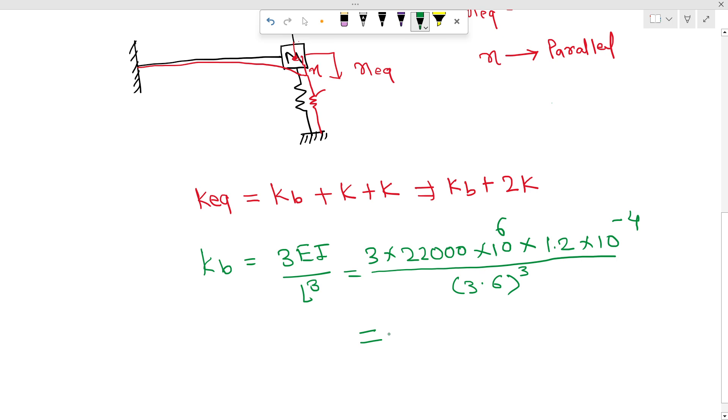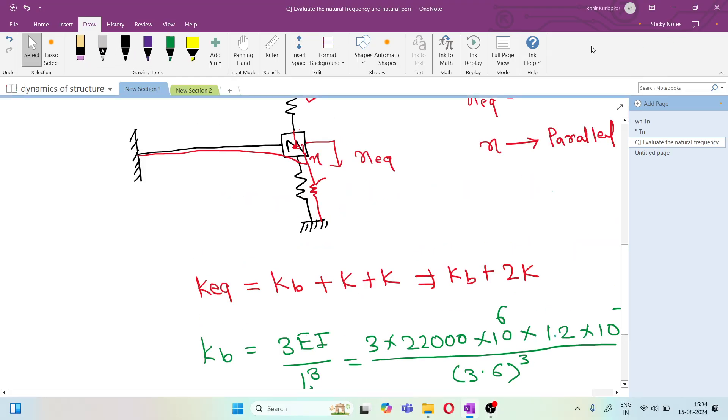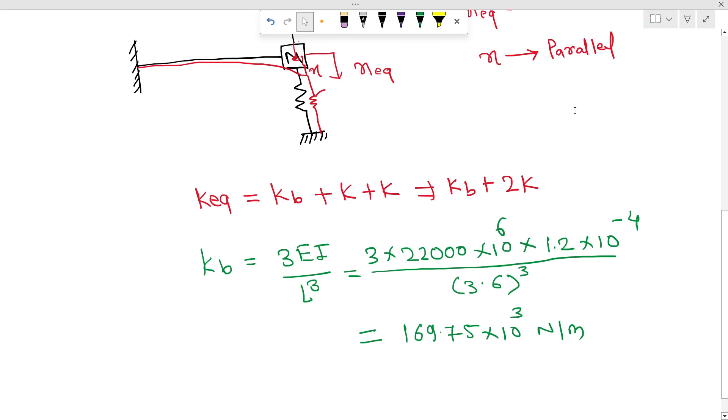we will get the answer 169.75 times 10 raised to 3 Newton per meter. So we have Kb.